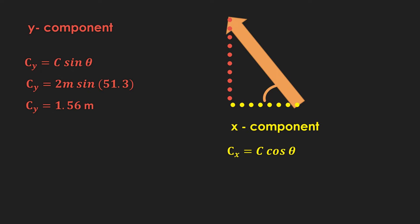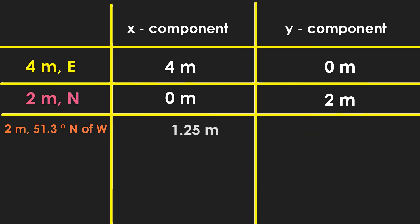Now for the x component cx, the adjacent side. Cx is equal to c cosine theta. Substitute and we get the x component to be 1.25 meters. Placing our answers, notice that we added the negative sign to our x component, 1.25 meters, because this x component is headed towards the west. And if it's headed in that direction, we need to place a negative sign. Now our table is complete.